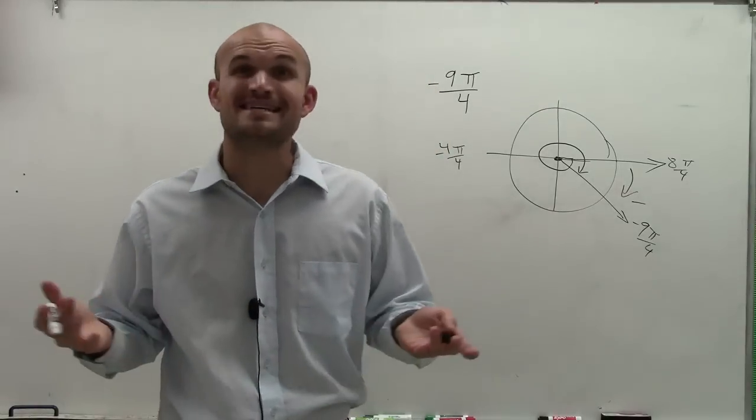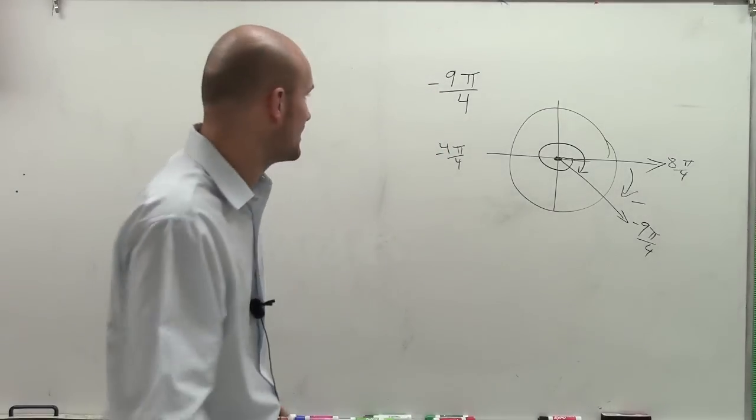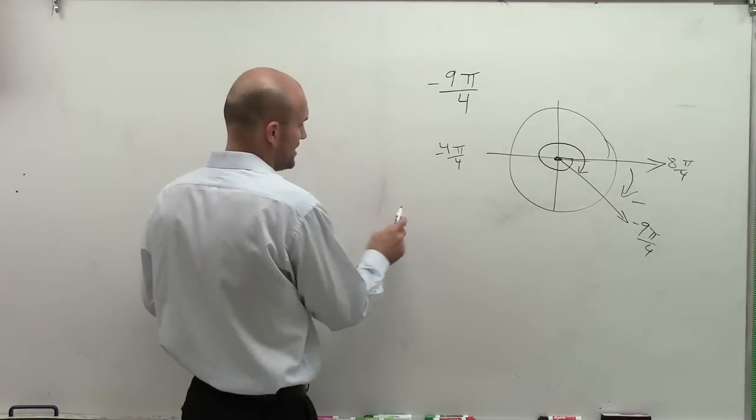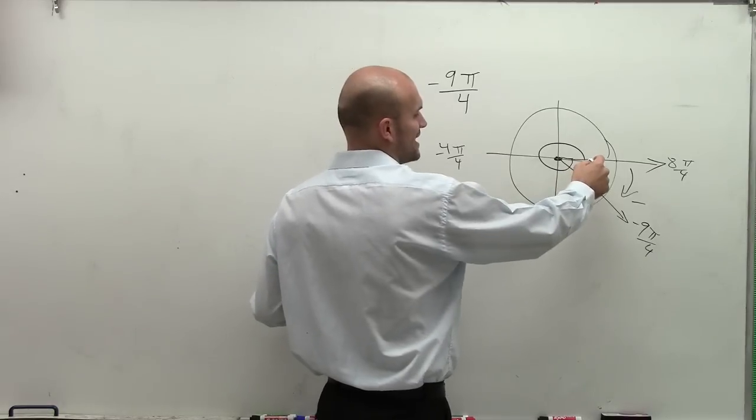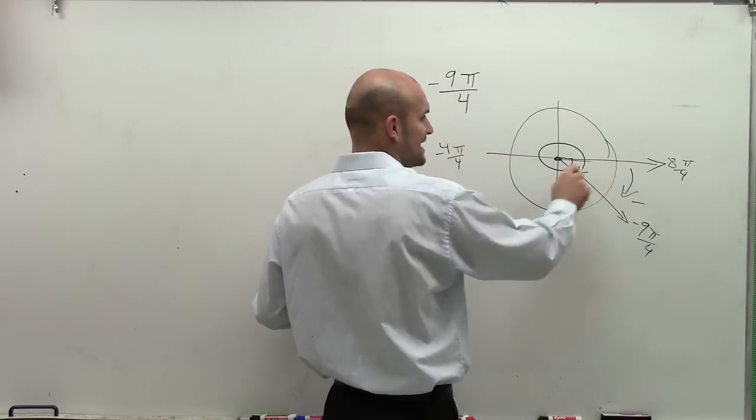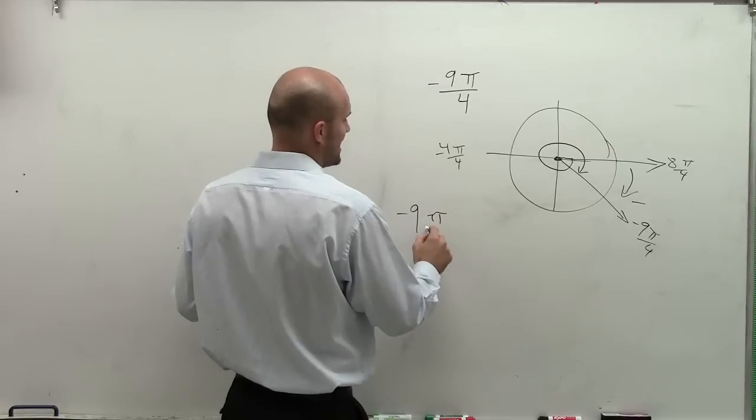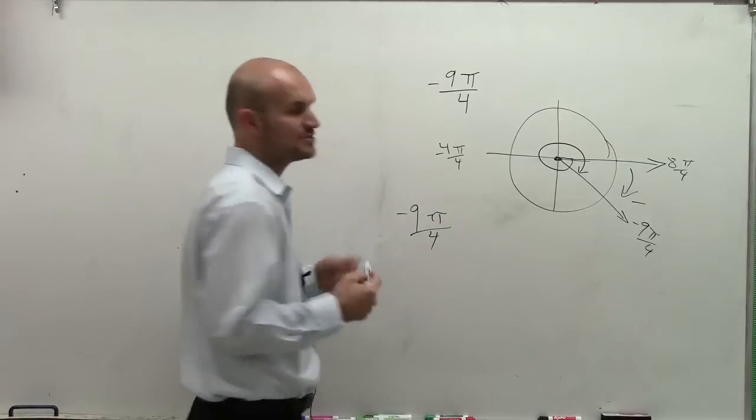So what I'm trying to do is, I just ask for finding me two coterminal angles. And usually, when you add a coterminal angle, remember, all we want to do is we want to find the same angle that has the same initial and terminal side. So usually, what we just said was add and subtract 2 pi.